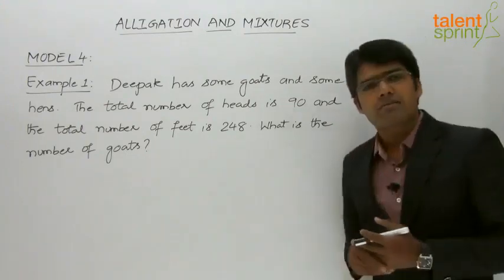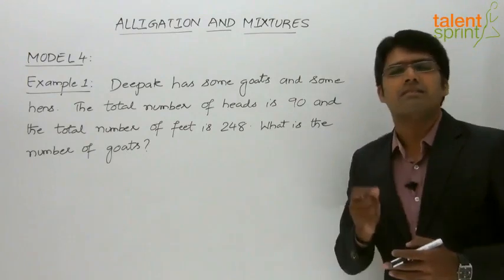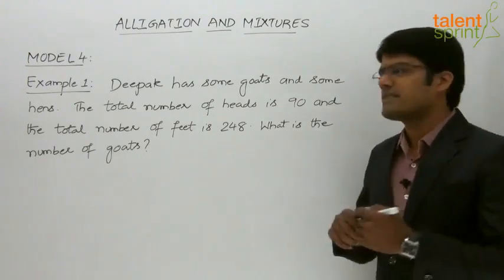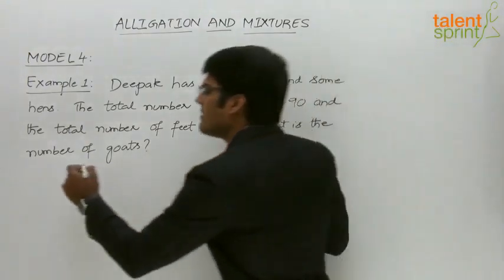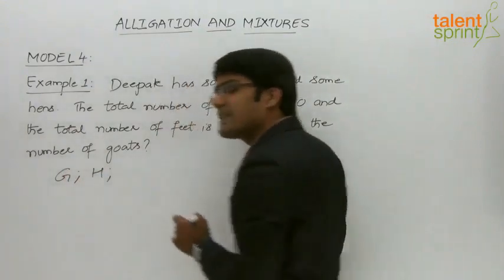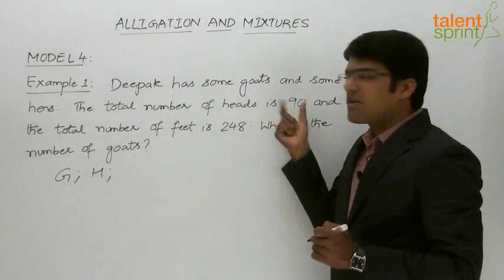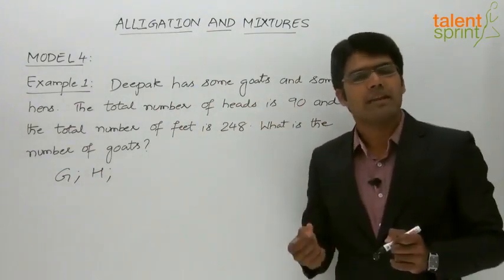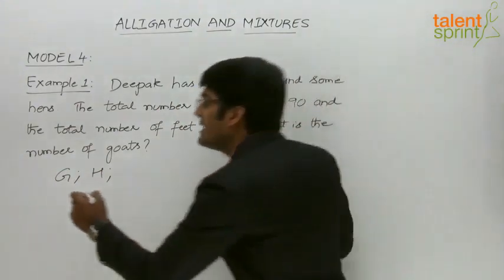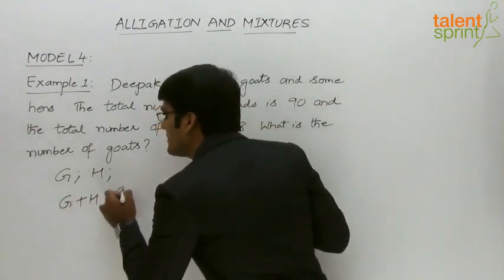This can be solved using two linear equations. Let us assume that the number of goats is g and the number of hens is h. From the question, the total number of heads is 90, and since the total number of heads equals the total number of animals, we can say g plus h is equal to 90.